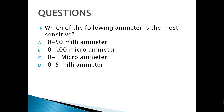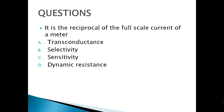Among the choices, we choose letter C as the one with the least amount of current, making it the most sensitive. It is the reciprocal of full-scale current of a meter — as stated earlier, it is called sensitivity.